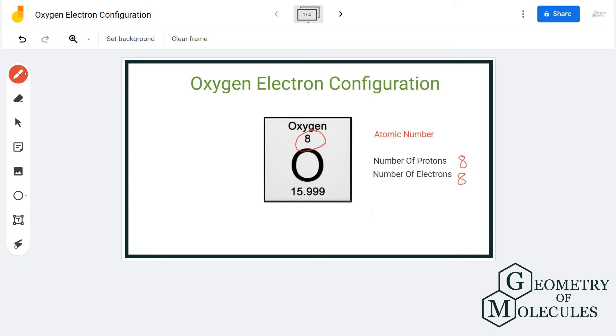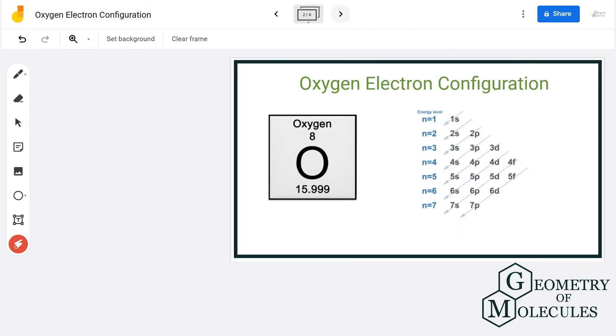So we have gotten the total number of electrons for oxygen, which is 8. Now using the electron configuration chart, we will find out its electron configuration.